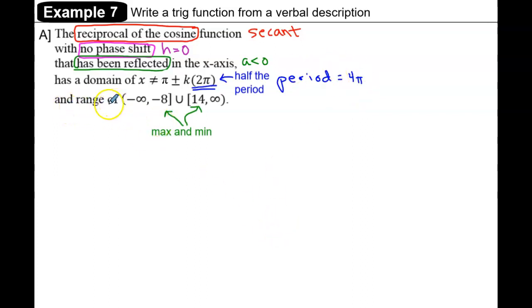In the range, we know that those upside-down U shapes are going to have relative maxes and mins at -8 and